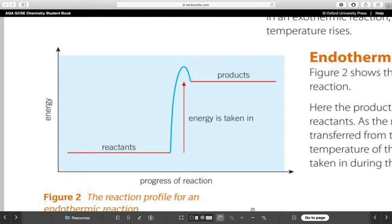At GCSE, what can you be asked to do? Well, the very typical question is to draw one of these diagrams or label it. And really, all you have to remember is which way round they are. Exo, the products are lower than reactants, and endo, as we see here, the products are higher than reactants.